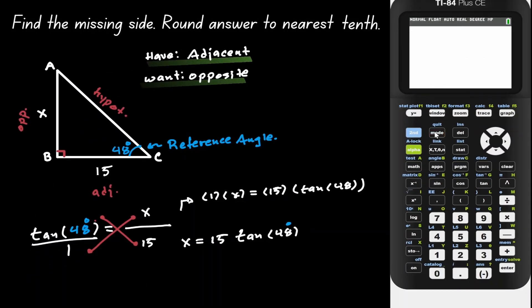Now let's press Second, Quit. With the calculator in degree mode, let's enter the expression 15 tangent of 48. Press 15, then the tangent button, place 48 inside the parenthesis, close the parenthesis, and press Enter. Here we have our answer. Because we want to express our answer to the nearest tenth, let's write it as 16.7.